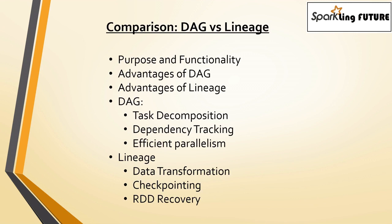So when we compare DAG and lineage: in terms of purpose and functionality, DAG optimizes the execution plan while lineage enables fault tolerance and RDD recovery. The advantage of DAG is that it provides efficient parallelism, eliminates unnecessary computations, and improves performance. The advantages of lineage are fault tolerance, data recoverability, and handling data lineage complexities.